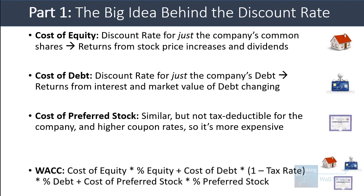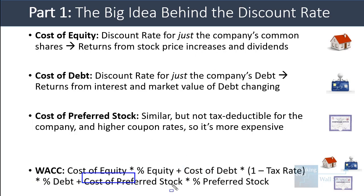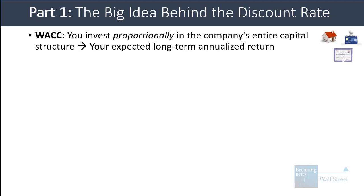The formula for WACC is actually very simple. You take the cost of equity multiplied by the percent equity the company has, take the cost of debt multiplied by one minus the tax rate — then multiply by the percent debt because interest on debt is tax deductible — and then take the cost of preferred stock and multiply by the percent preferred stock. What makes it difficult is not the formula, but how to get all the proper values. The idea is that you invest proportionally in the company's entire capital structure, and WACC represents your expected long-term annualized return.